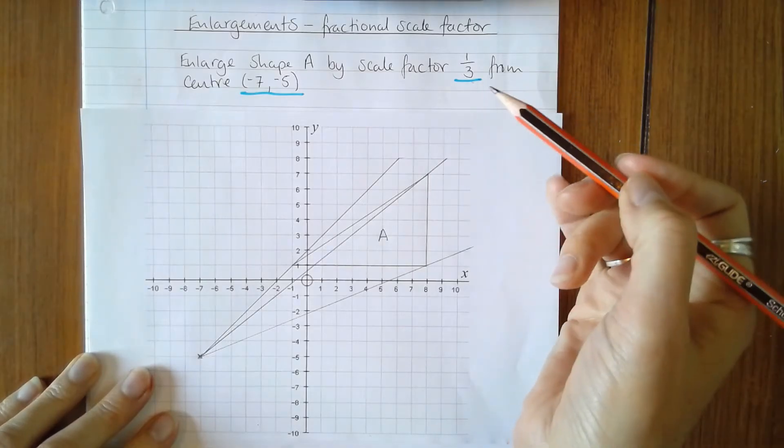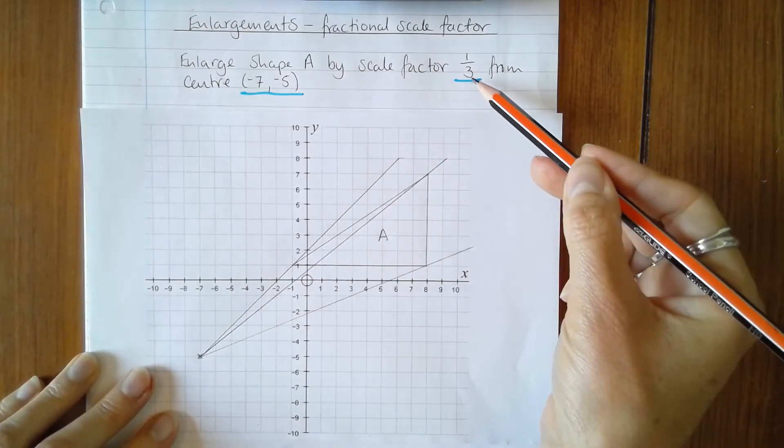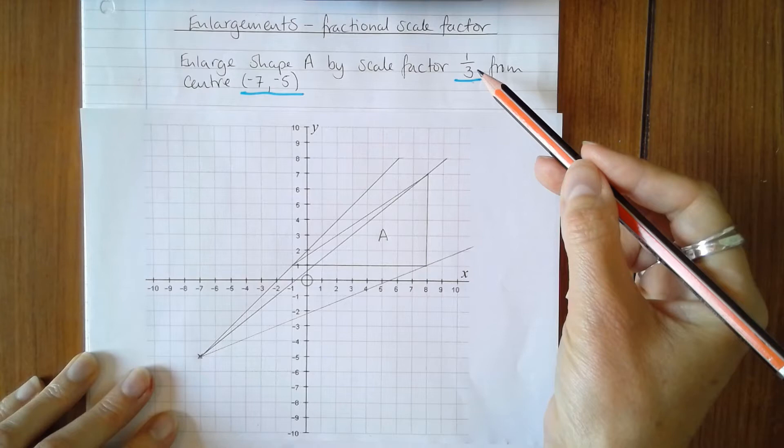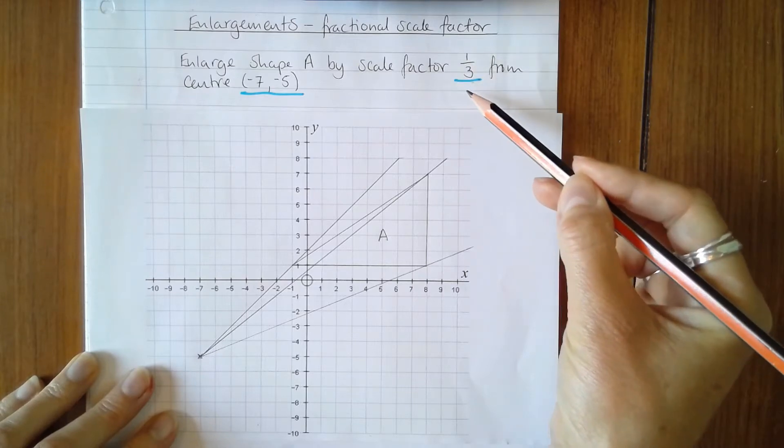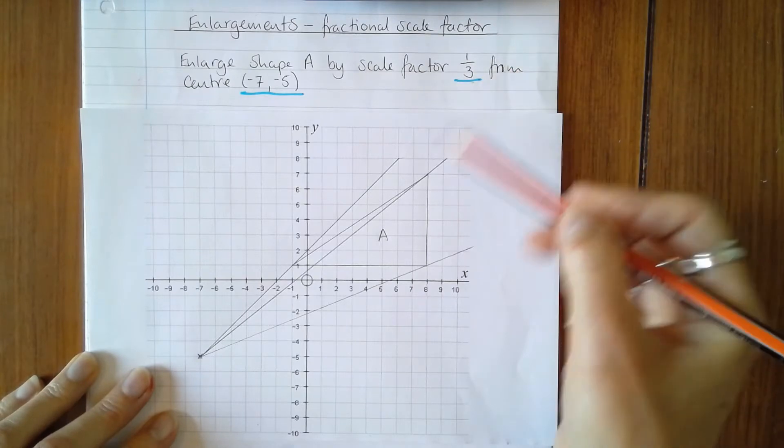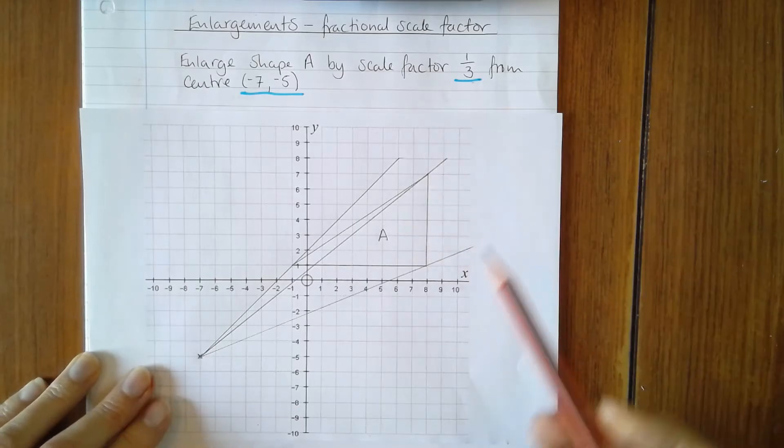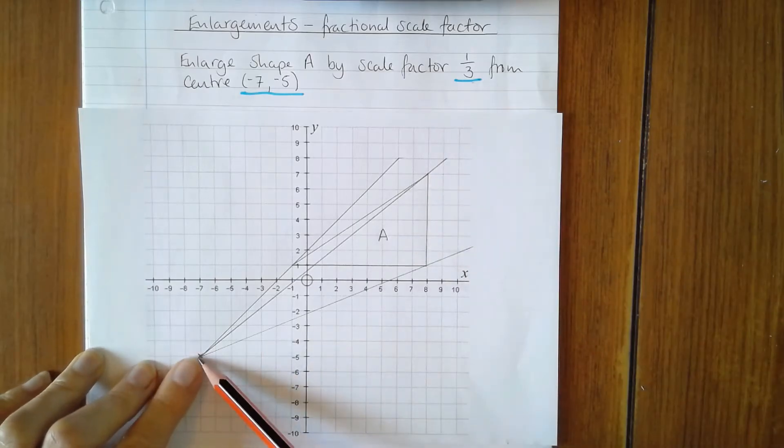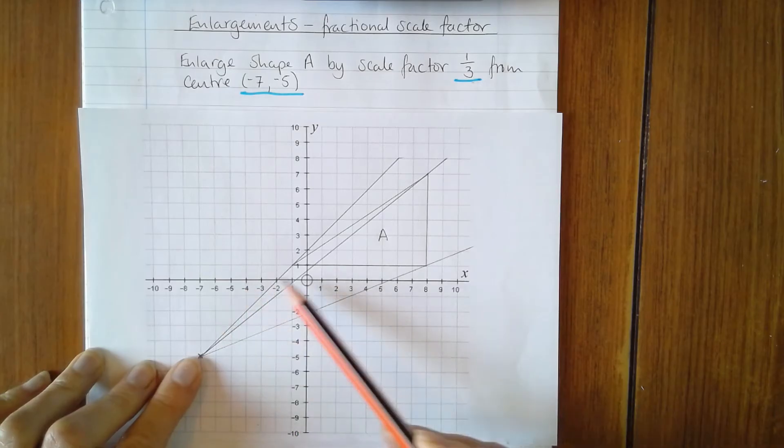Now this is a scale factor enlargement of 1/3, which means that even though it's called an enlargement, the new shape will actually be smaller. It will be 1/3 of the size of shape A, but it will also be 1/3 of the distance from the center, so it will end up around here somewhere and be 1/3 of the size.